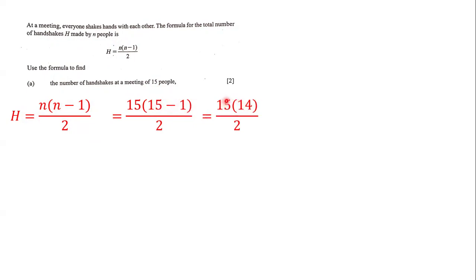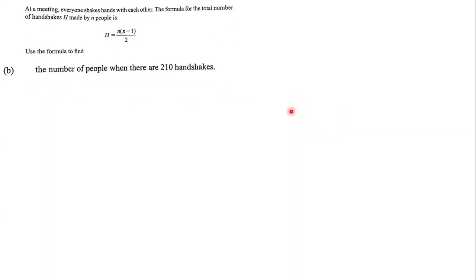So we have 15 multiplied by 14, all over 2. 15 times 14 is 210, and 210 divided by 2 is 105. That's the answer for this question: 105. Next, we need to use the formula to figure out the number of people when there are 210 handshakes.